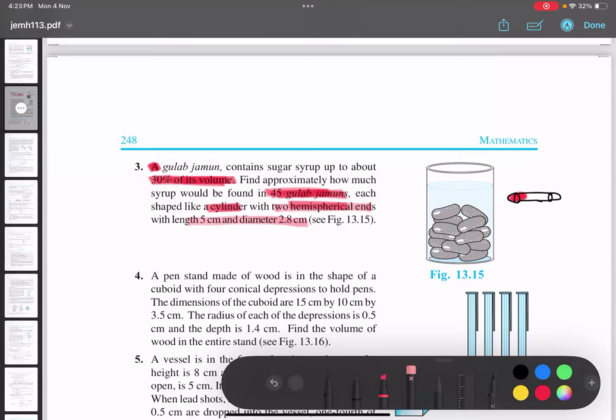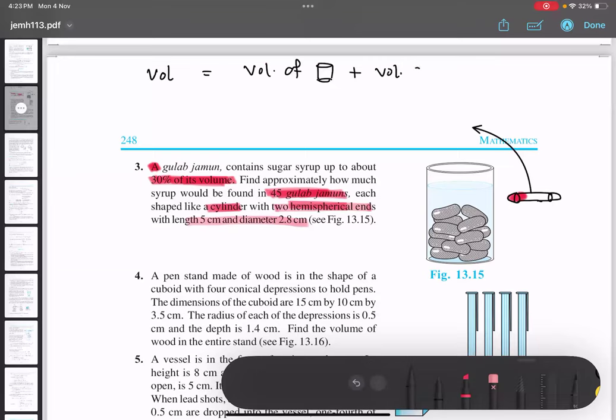Now let us first of all calculate the volume of one gulab jamun. Can you calculate volume of one gulab jamun? How do we calculate? Can you tell me how do we calculate volume of one gulab jamun? Volume of cylinder plus volume of sphere. Very good, volume of cylinder plus volume of sphere. How do you get sphere? Because if I take these two hemispheres together, I will get a sphere, got it?